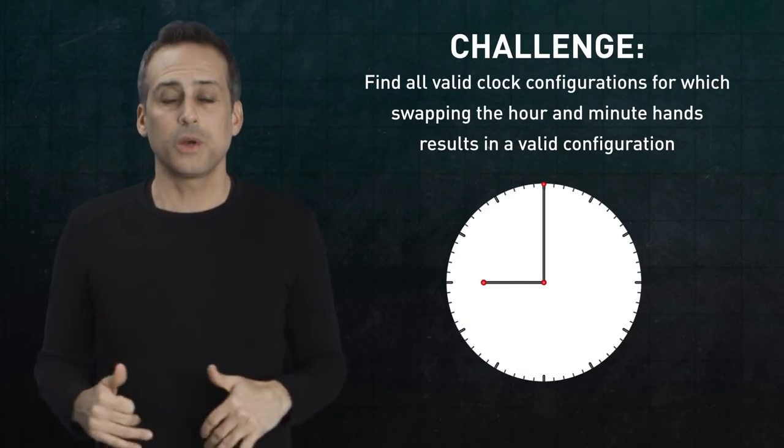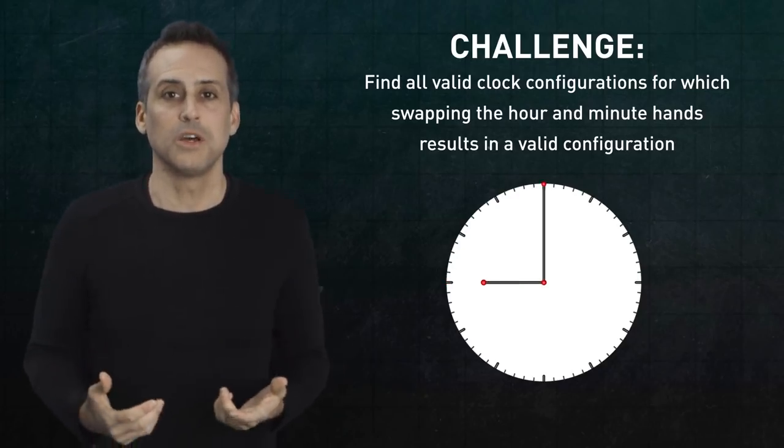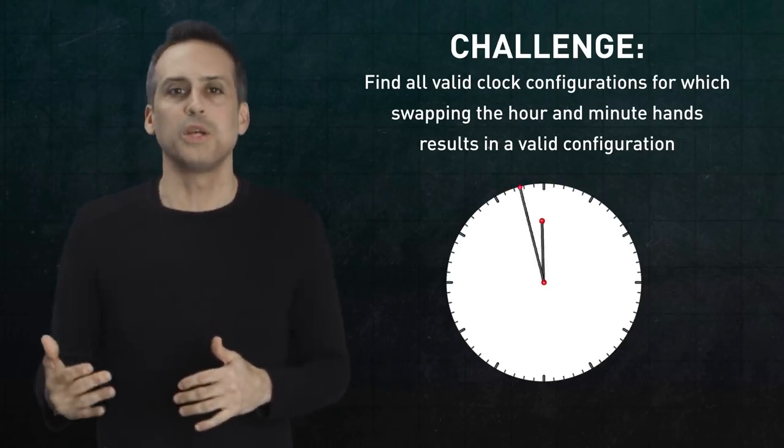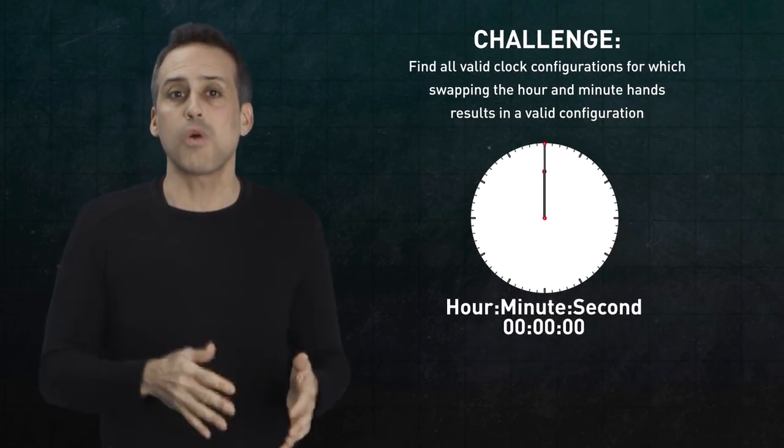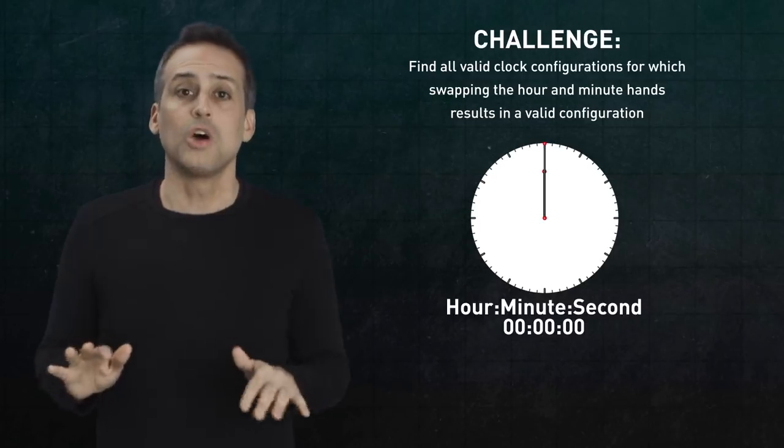I'll wrap up by posing the challenge formally. We want you to find all valid clock configurations for which swapping the hour and minute hands would also result in a valid configuration. Work only within a 12-hour period, say midnight to noon, not including noon. And report all the times in hour, minute, second format, including fractions of a second with no decimal approximations or rounding.